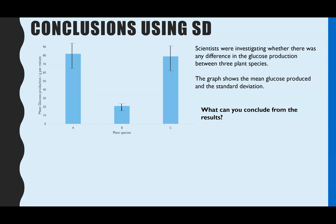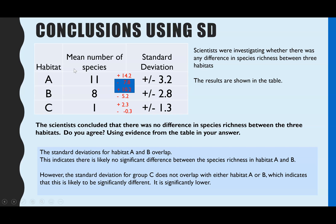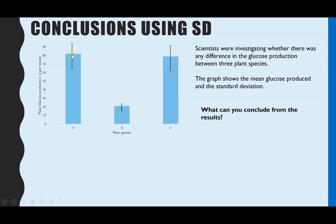So this is actually the easier way to visualize it, where you are given the mean and the standard deviations shown on a graph, rather than being shown as a table and you having to calculate the top end and lower end and visualizing is there an overlap. So this one's much clearer. So again, it always starts with what the scientists are investigating. And this time it's whether there was any difference in the mean glucose production between three plant species. And that would be within photosynthesis. They've also told you that the graph is showing the mean glucose production and that's in grams per minute. And the bars indicate the standard deviation.